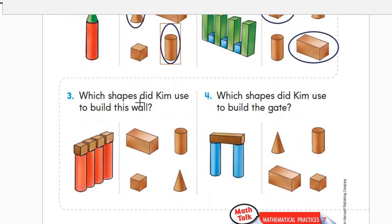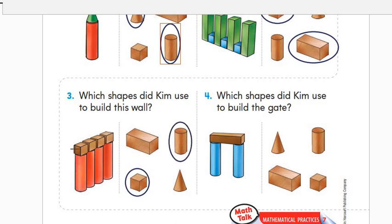Number three: which shapes did Kim use to build this wall? He used cubes and cylinders. How many cubes? One, two, three, four — four cubes. And how many cylinders in this wall? One, two, three, four — four cylinders.